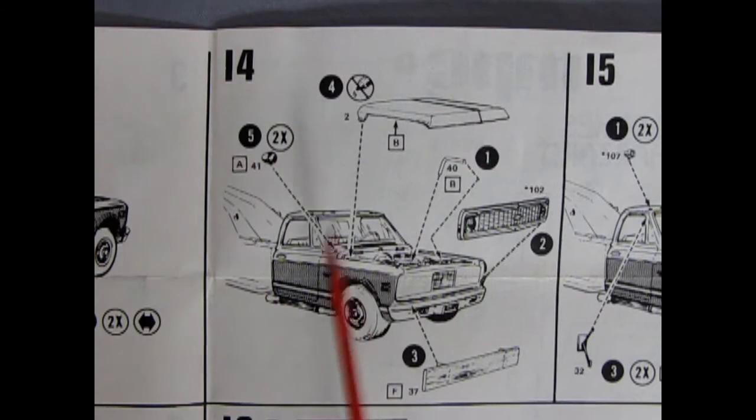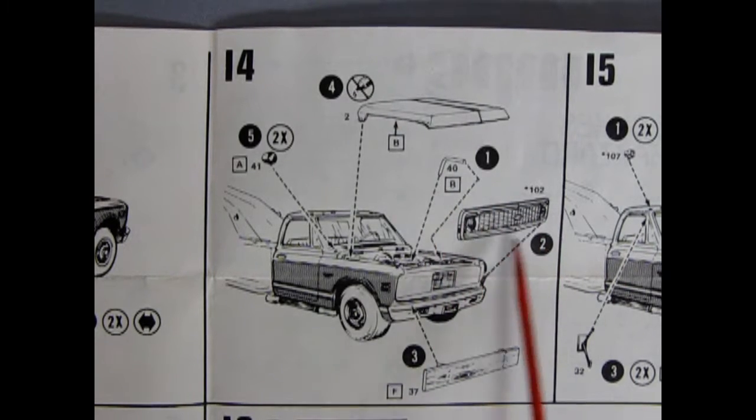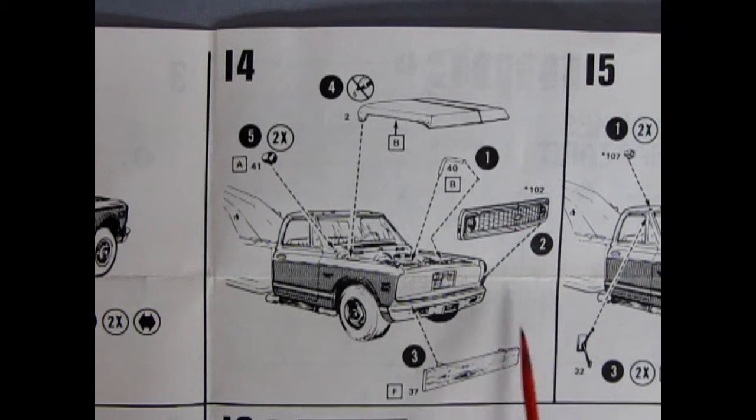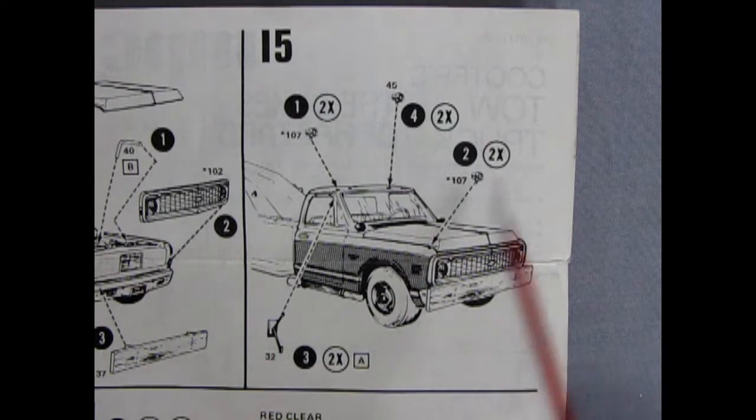Panel 14 shows our hood dropping in place as well as our spotlights, one for each side. There's upper radiator hose and we've got a grill. Remember to paint on that Chevy bowtie emblem, and we've got our wooden bumper going right in place. Panel 15 has our signal lights, little fog lights and our side view mirrors.